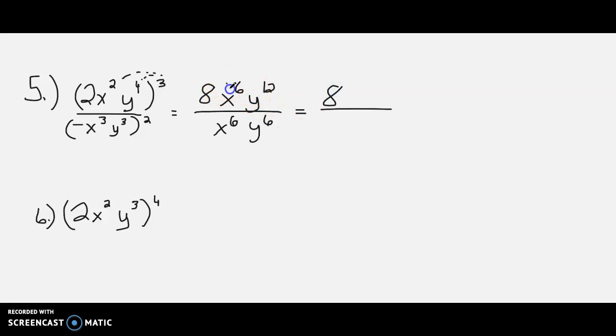The x to the 6th over x to the 6th cancels out. y to the 12th, y to the 6th. We're just left with y to the 6th over 1, and you don't even have to write over 1. You can just say 8y to the 6th is the final answer.